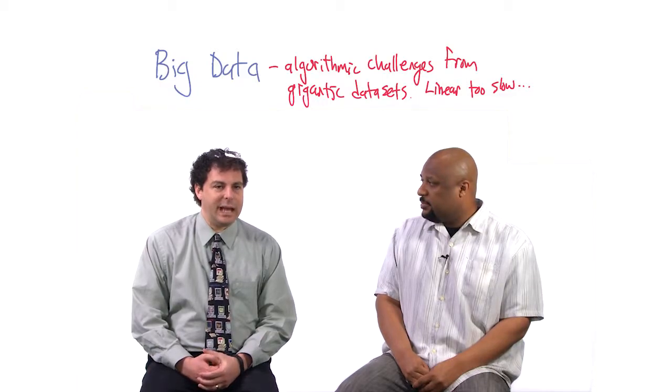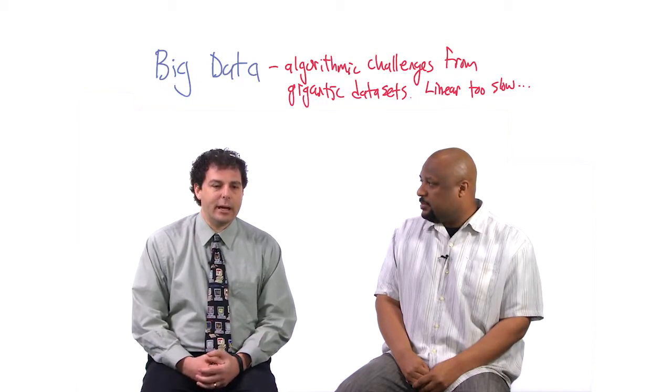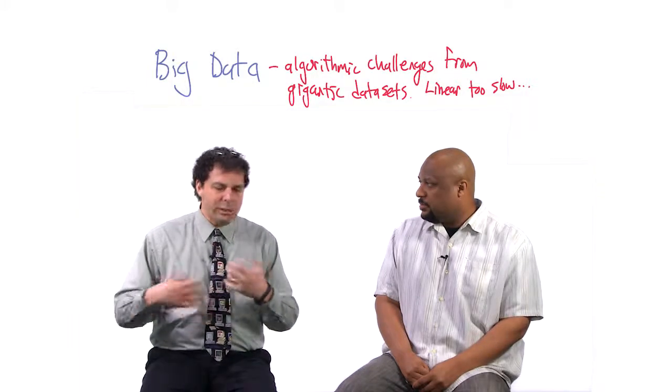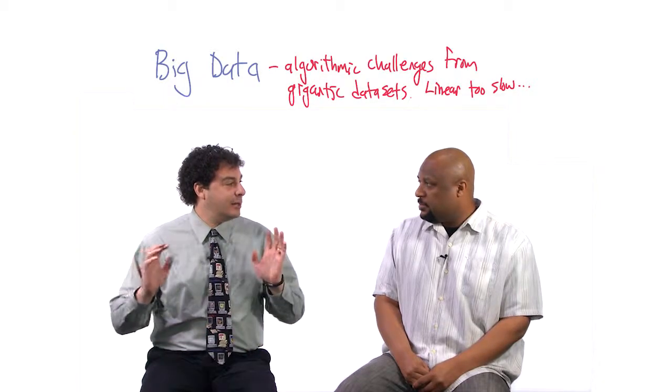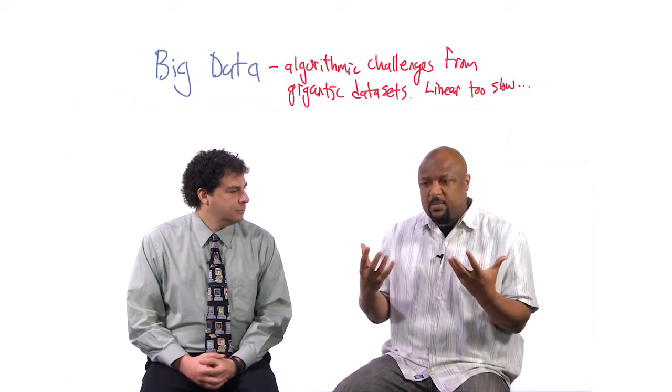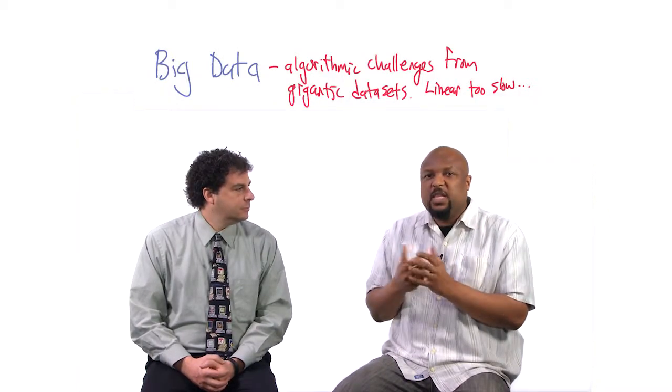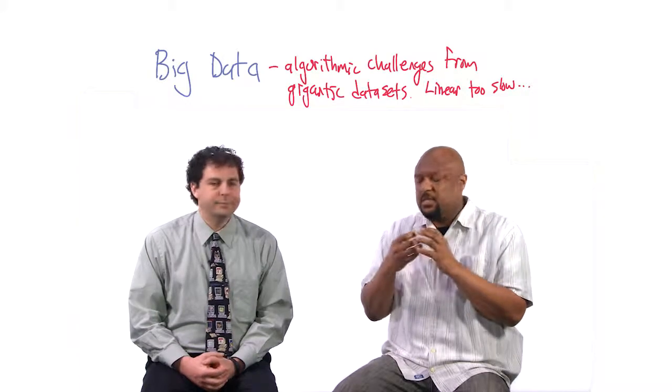So big data is the issues that come up when you actually have a tremendous amount of data. So more and more now it's possible to attach sensors to the world and get tremendous amount of information, either web pages or biological data. I've got a little thing that measures my steps every day. You start to pull this data over enough people. There's a tremendous resource, but also challenges in actually extracting good information from it. Right. And a lot of those challenges are algorithmic. You know, we talk about things like the curse of dimensionality and having to deal with exponentiality.